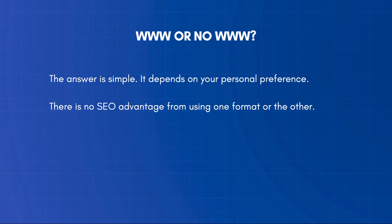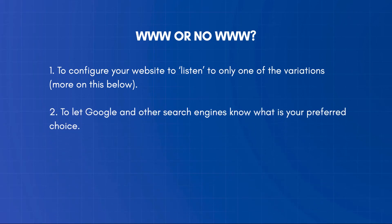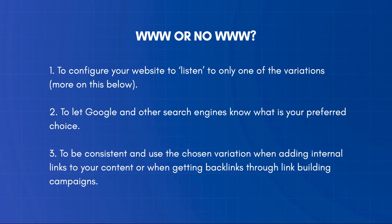Three things are important. First, to configure your website to listen to only one of the variations. Second, to let Google and other search engines know what is your preferred choice. Third, to be consistent and use the chosen variation when adding internal links to your content, or when getting backlinks through link building campaigns.